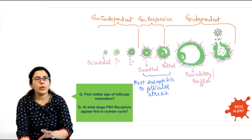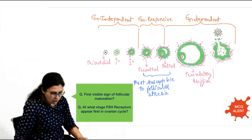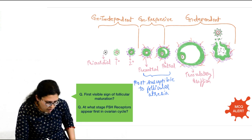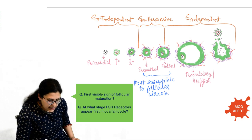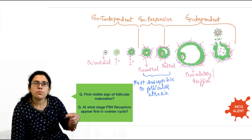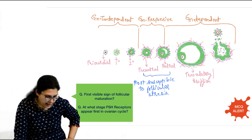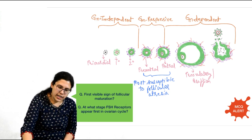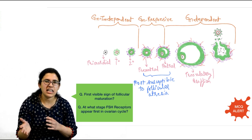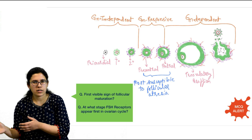In the primary follicle there will be multiplication of granulosa cells, increase in oocyte size, and appearance of zona pellucida. In the secondary follicle, the outermost layer of granulosa cells becomes specialized — these are called theca cells. Pre-antral follicle and secondary follicle terms are used interchangeably in some sources, but pre-antral follicle is the preferred term for our discussion.